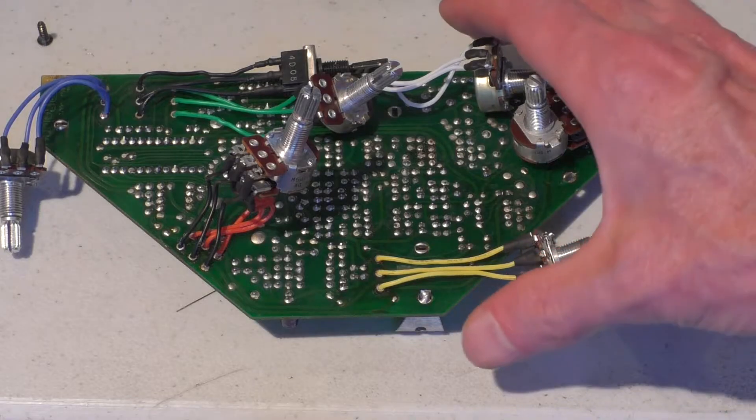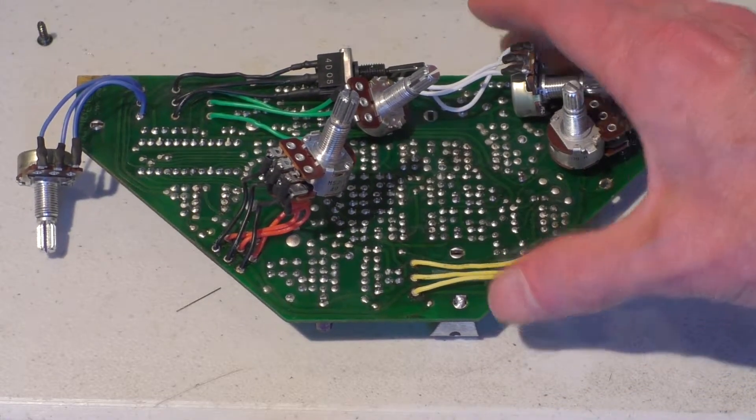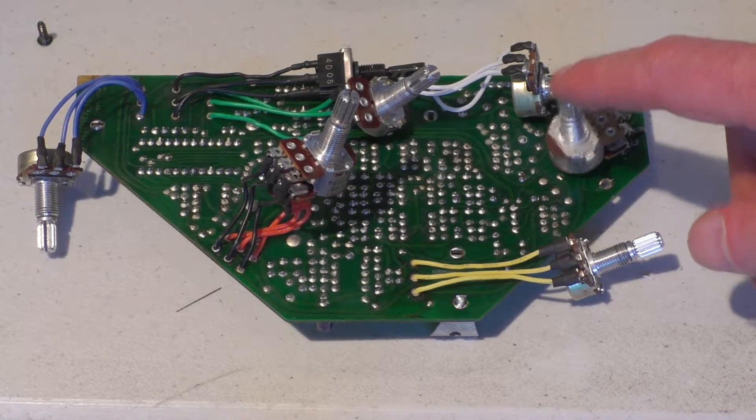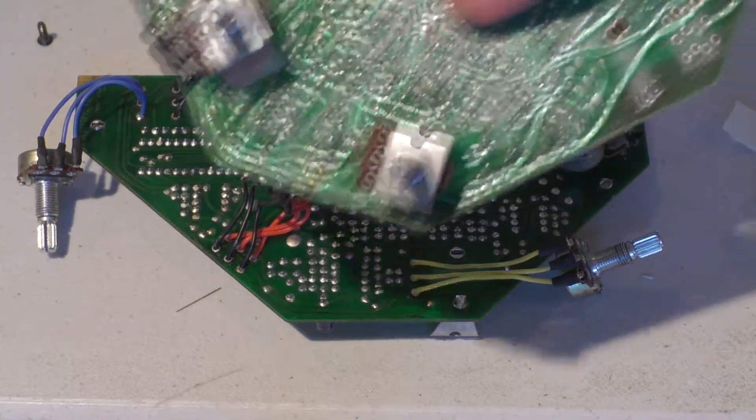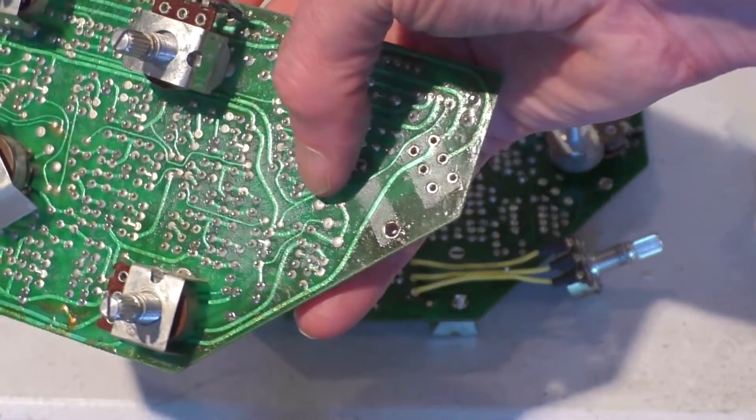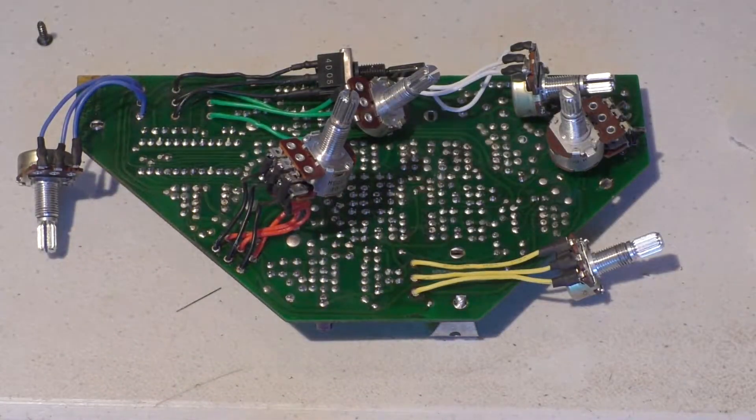The original problem with this guitar was that the volume control didn't work. So this is the volume control that I pulled off of the original G303 card here. You can see where it's been removed. Now there's a frame that goes around that.